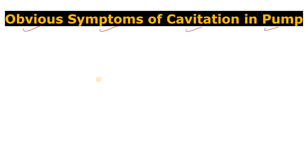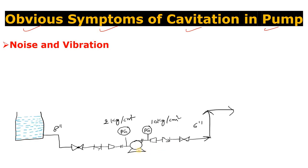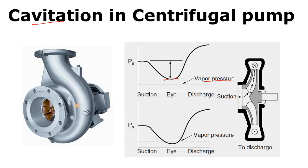The first symptom of cavitation in a centrifugal pump is noise and vibration from the pump. Here you can see this is the centrifugal pump and this is the graph of the cavitation. Cavitation is basically the formation of bubbles and then the collapsing of those bubbles.